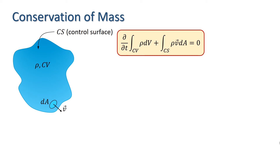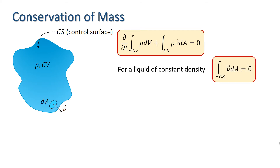For a liquid of constant density, the mass of fluid within the control volume is constant, and thus the left-hand term in this equation is zero, and rho can come outside the integral on the right-hand side. In this case, the law of conservation of matter takes the form: the integral over Cs of v dA equals zero, which is usually called the continuity equation.